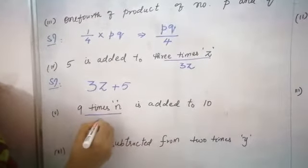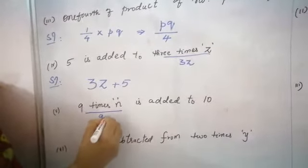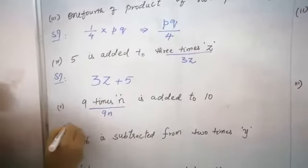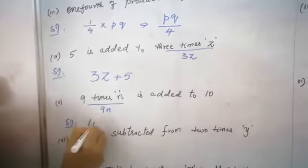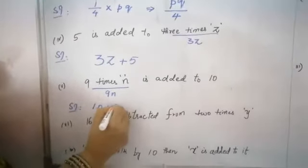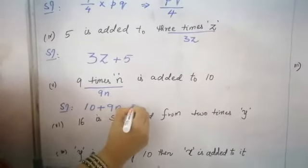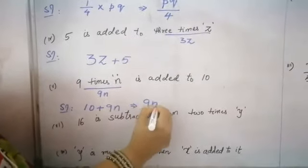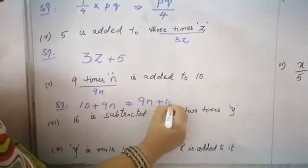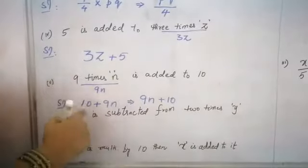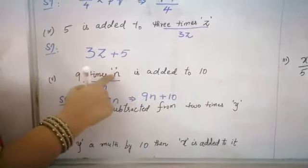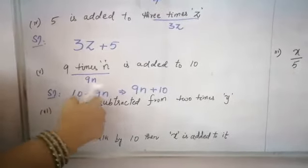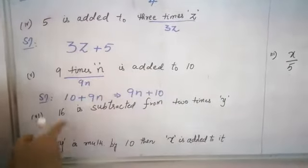9 times N is added to 10. You can write 10 plus 9N, and the constant should come first, or you can write 9N plus 10. Both are acceptable — you can write 9N plus 10, or 10 plus 9N, because 9 times N is added to 10.